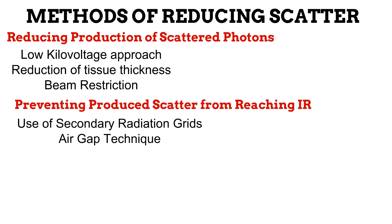In the last video, we looked at the low kilovoltage approach, reduction of tissue thickness, and the beam restriction approach as methods of reducing the amount of scattered photons produced. The next set of methods are not concerned with how much scatter is produced. Instead, these methods focus on preventing whatever scatter has been produced from reaching the image receptor. The two common methods are the use of grids and the air gap technique.